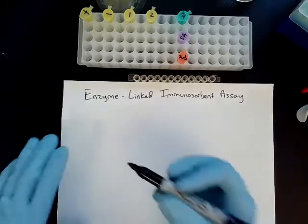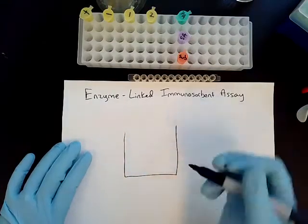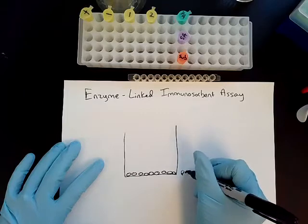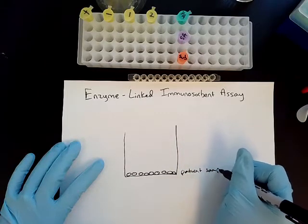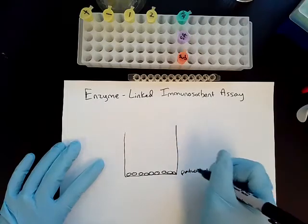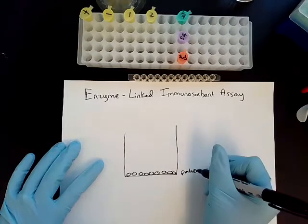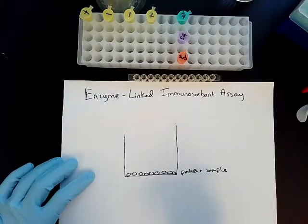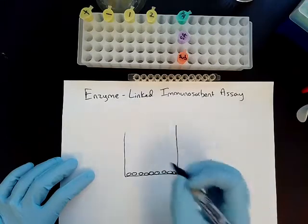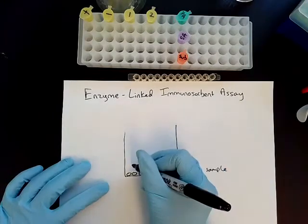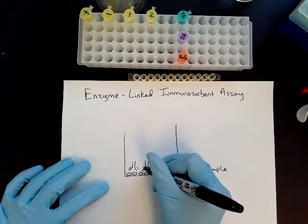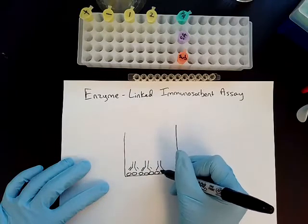In an indirect ELISA, you have a well, and at the bottom of the well you're going to put patient sample. In that patient sample, you are suspecting that there is a microorganism that you're testing for. We have designed certain antibodies that are able to bind to specific pathogens. The next step is we're going to insert the primary antibody, which has a known affinity for binding to whatever pathogen we're trying to test for.